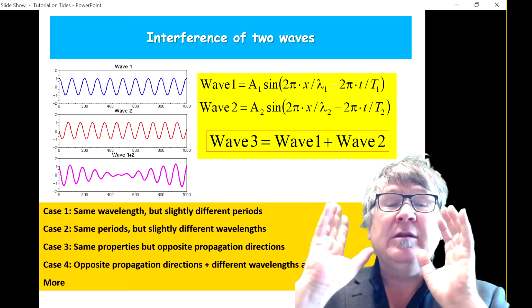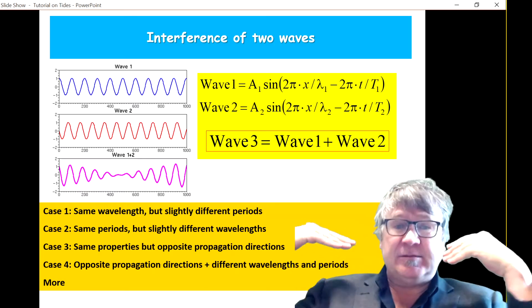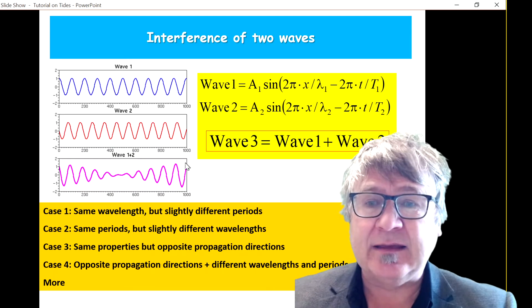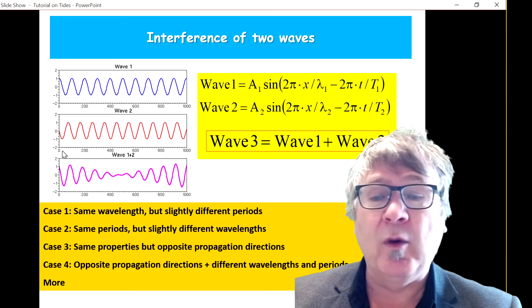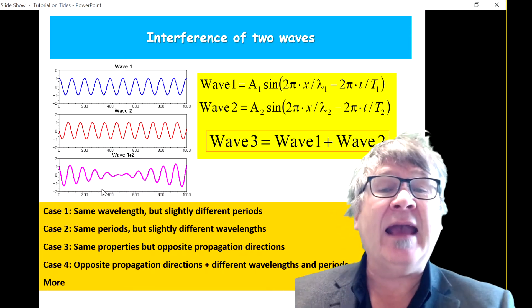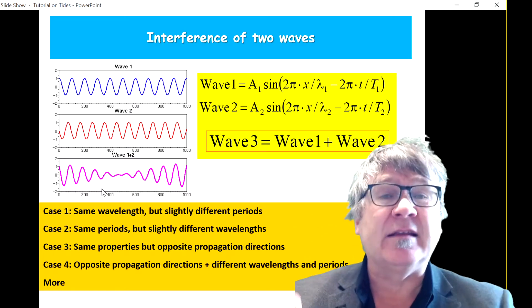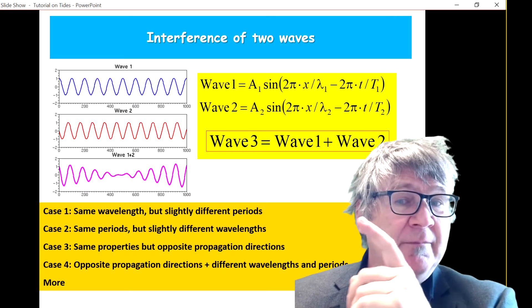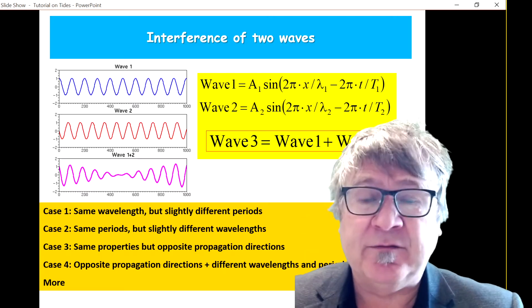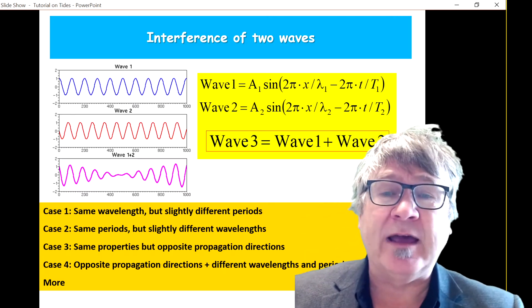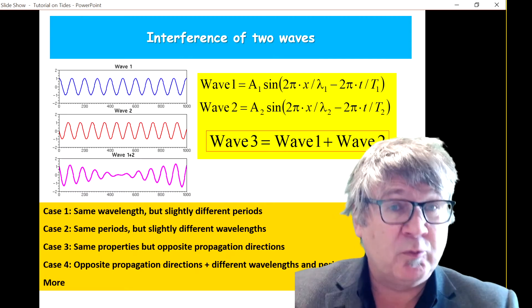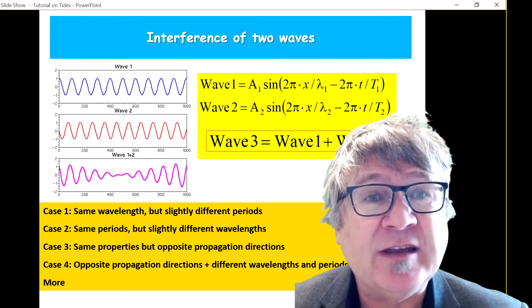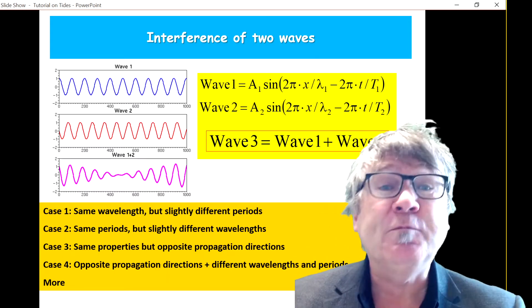And I already note now is that the speed that you get of these interference patterns, like in this graph here, we call it a wave group, this pattern here. Actually, the speed of that can be significantly different to the individual speeds of these original waves. So it's a difficult task, a more difficult task to predict the, we call it the group speed.